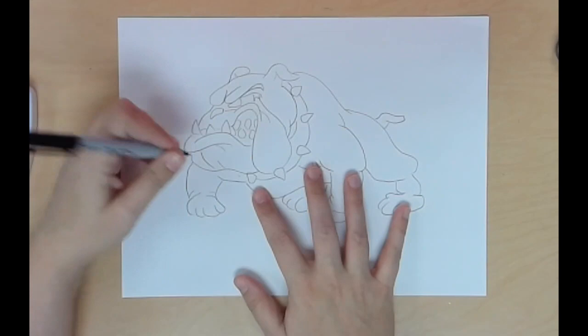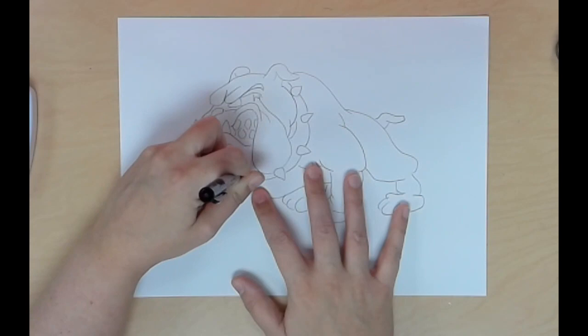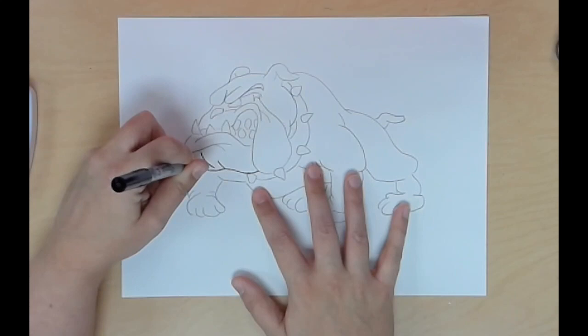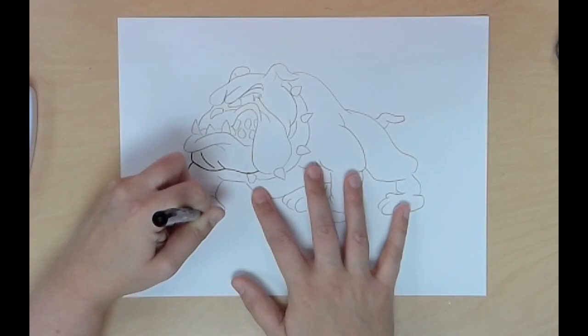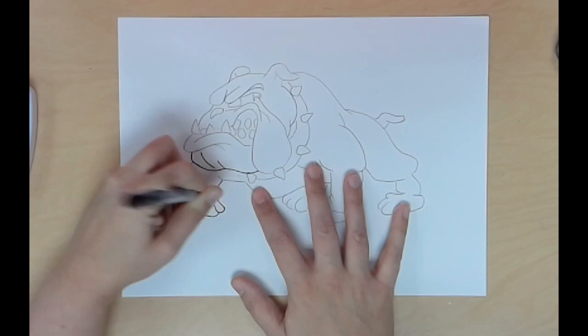Now that we're done drawing our bulldog, we're ready to move on to the painting portion. The first thing you need to do is trace it with Sharpie. You're going to use the fine point inside because there's a lot of details on this bulldog. I'm not going to do the whole thing just for this video.